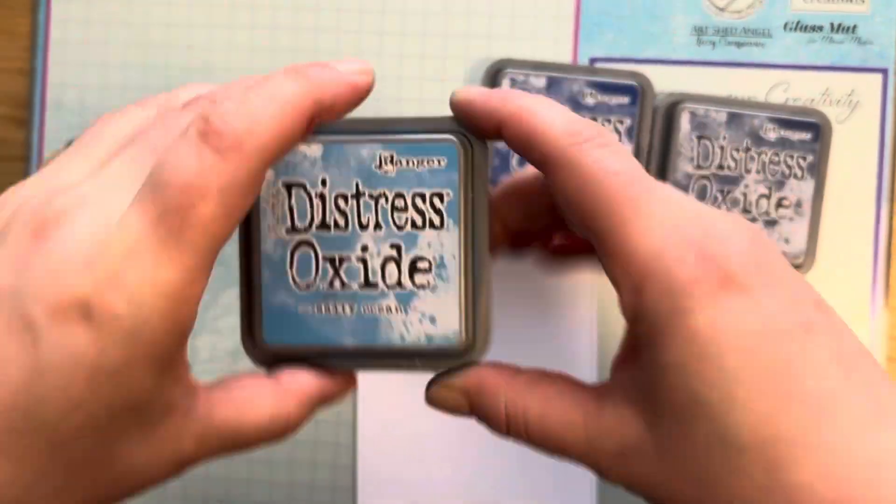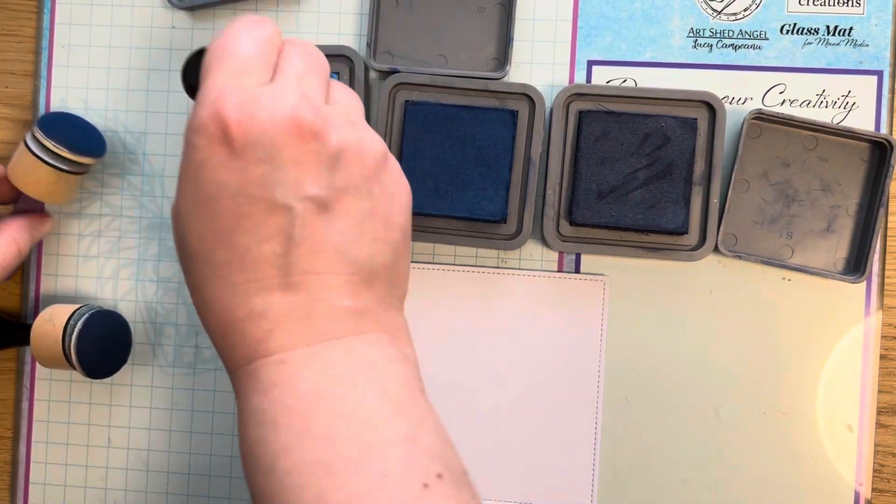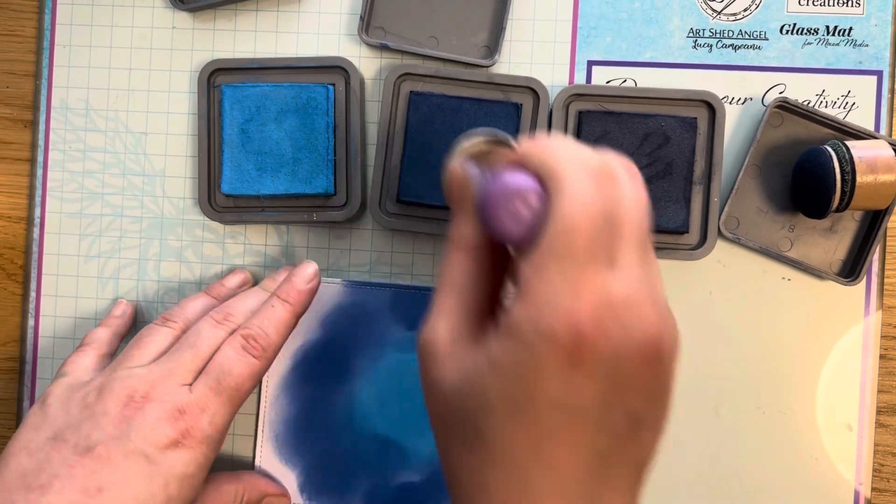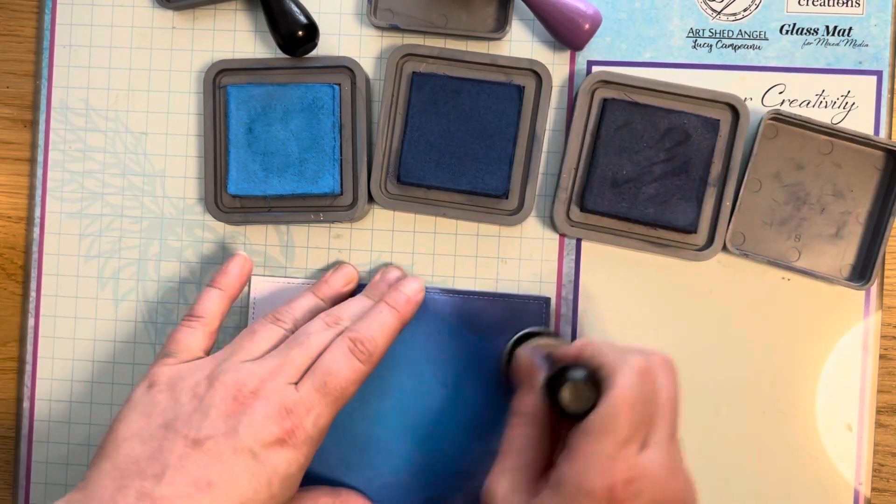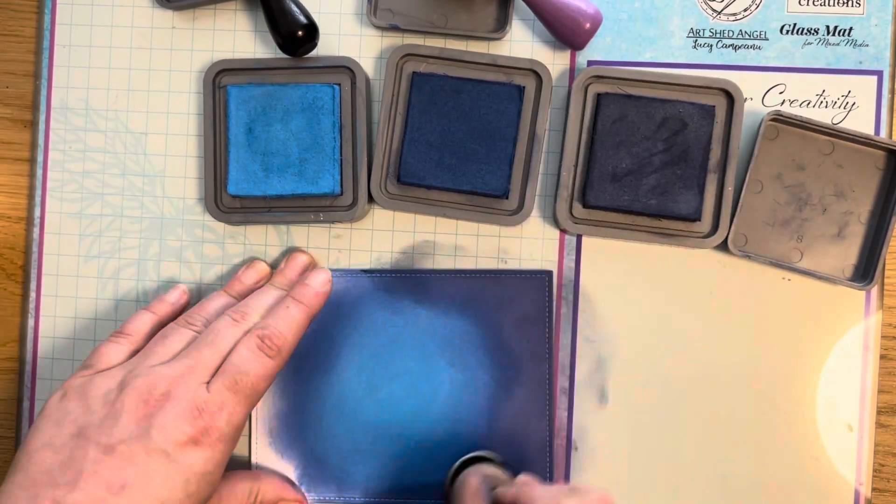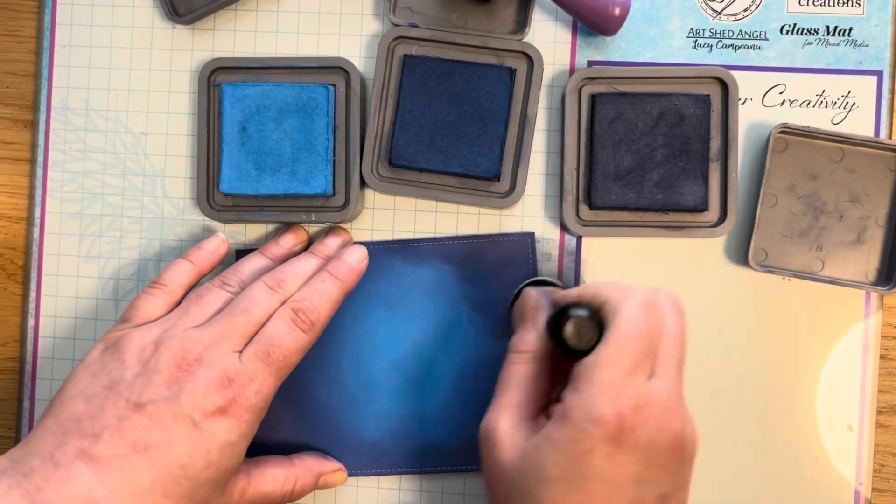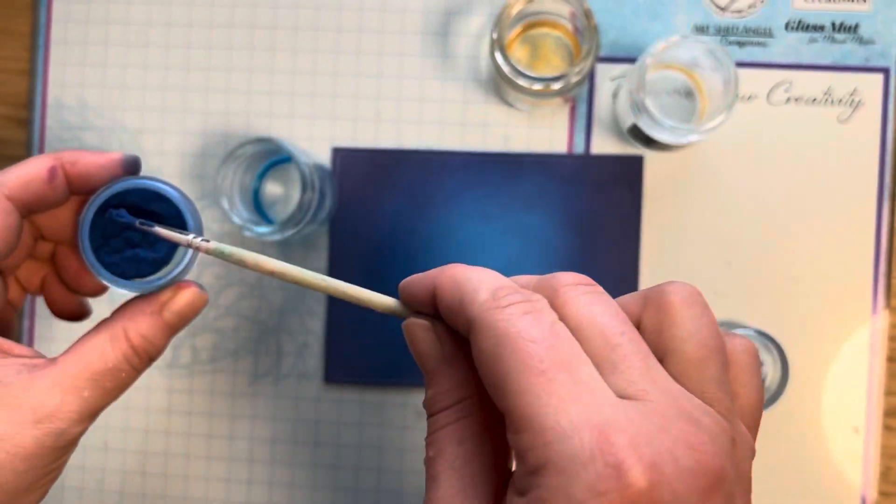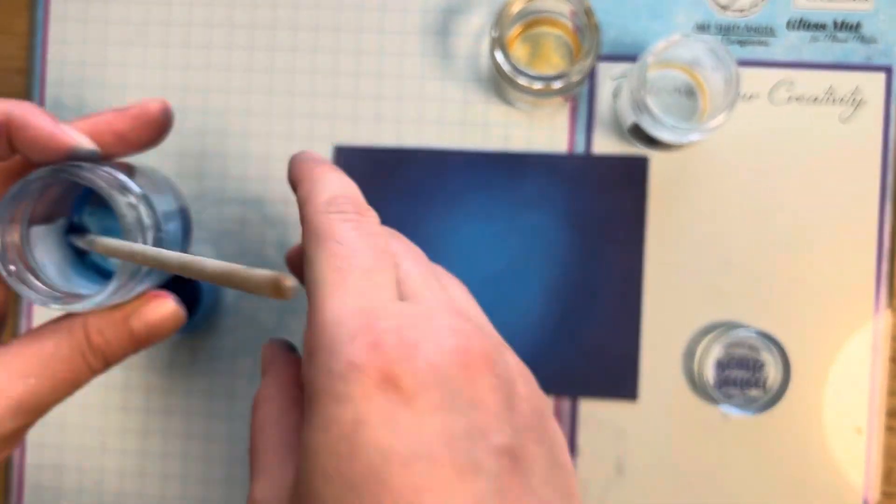I use Salty Ocean, Prize Ribbon, and Chipped Sapphire for the background. I start with Salty Ocean in the middle, go around with Prize Ribbon, go back to the lighter color, then Chipped Sapphire around. I go through the colors a few more times, turn it around and do the other side. Here are the Perfect Pearl powders I took.